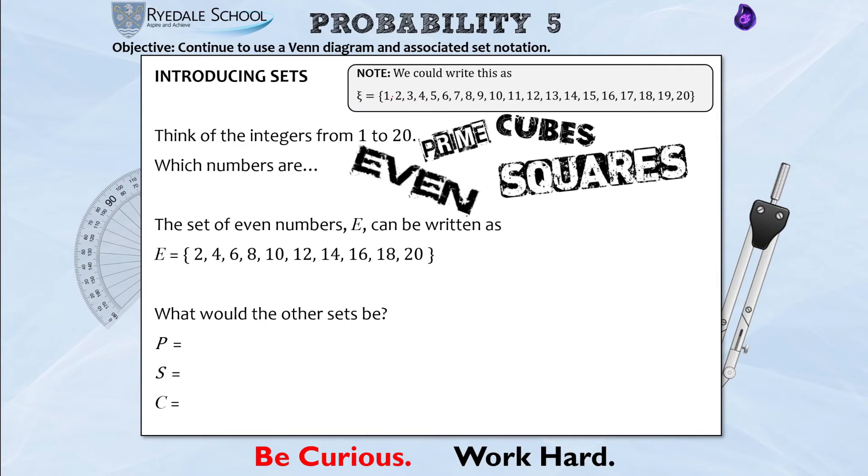So if this is my set of data, the numbers 1 to 20, the even numbers which I've called E would be all the numbers from 2 to 20 that are even, so 2, 4, 6 and so on. And you'll see I've put the numbers in this set, I've populated this set in numerical order.